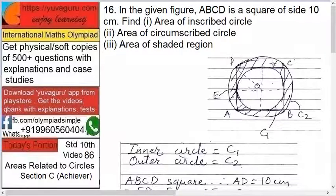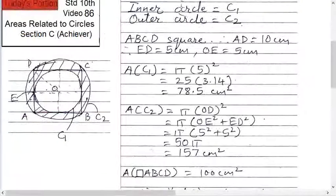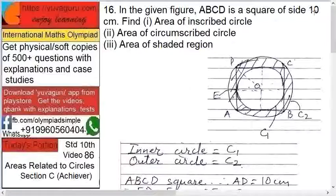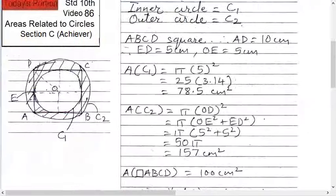So quite easy one. How to do it? Let's call this inner circle as C1 and outer circle as C2. Area of square, ABCD is a square, right? So AD is what? AD is 10, by given.